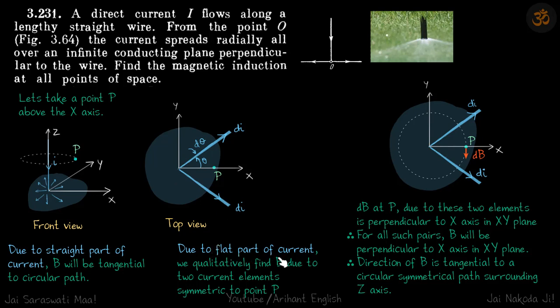Now due to flat part of the current, this is a bit tricky. Can we comment anything about the direction of field here because of the flat part, this shaded part? How we will resolve this is we qualitatively find B due to two current elements symmetric to point P. Current is flowing in radial direction through all the shaded region. Let us take two of the elemental currents, dI and dI, and see what the value of field will be because of these two elemental wires.